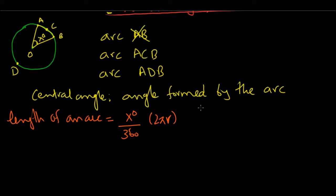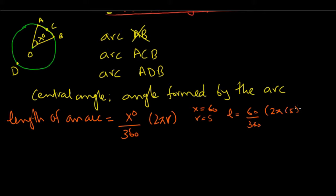For example, suppose your central angle is 60 degrees and your radius is 5. The length of the arc is simply 60 over 360 times 2π times 5. Simplifying, you end up with 5π over 3.